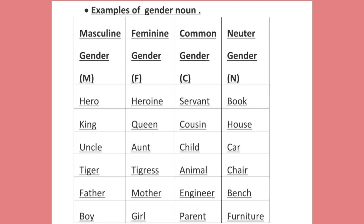These are some examples of gender nouns related to masculine, feminine, common gender, and neuter nouns. The short notation for masculine gender is M, feminine is F, common gender is C, and neuter gender is N. For example: hero is masculine, and its feminine form is heroine. Masculine king is opposite to queen. Servant is common gender — it can be male or female. Book is neuter gender — a non-living thing. Cousin is common gender — it may be a girl or boy cousin. House is neuter gender — a non-living thing.